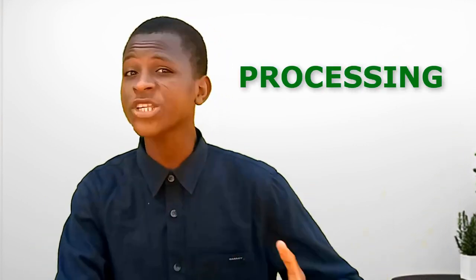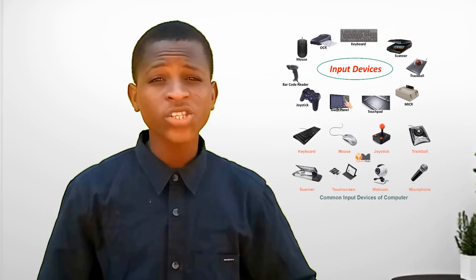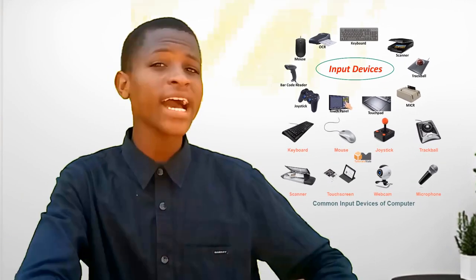Hardware refers to the physical components of a computer or electronic device. It encompasses all the tangible parts that you can see and touch. Examples of hardware include the CPU, memory modules, storage devices such as hard disk drives and solid state drives (HDDs and SSDs), and input/output devices such as keyboards, mice, and monitors.